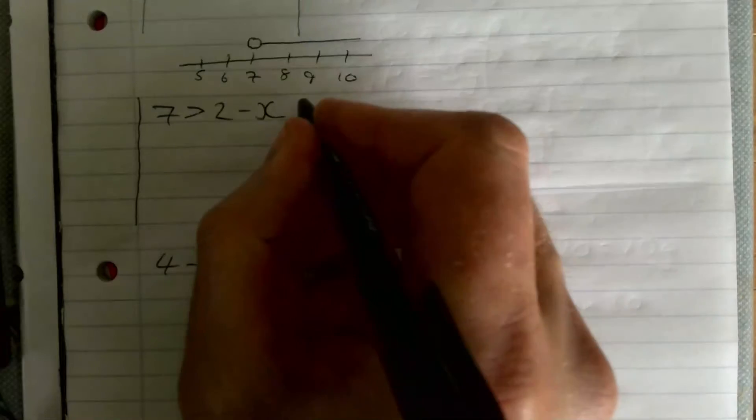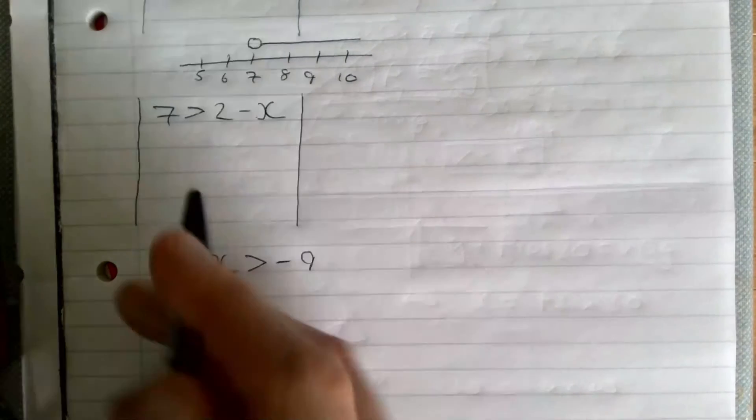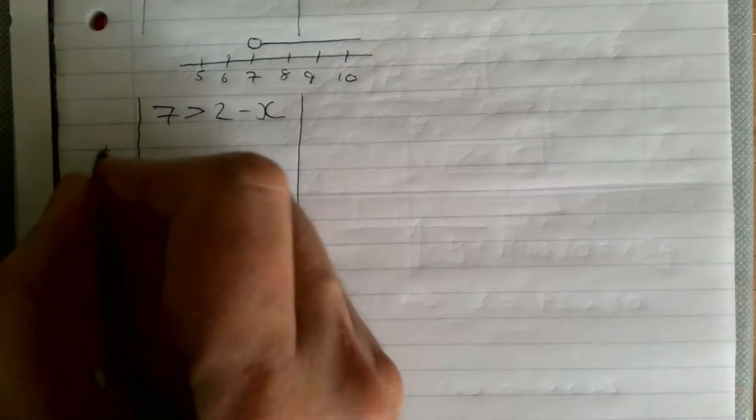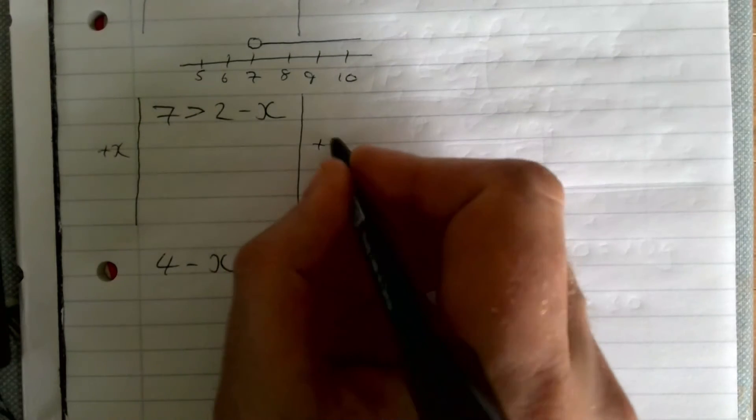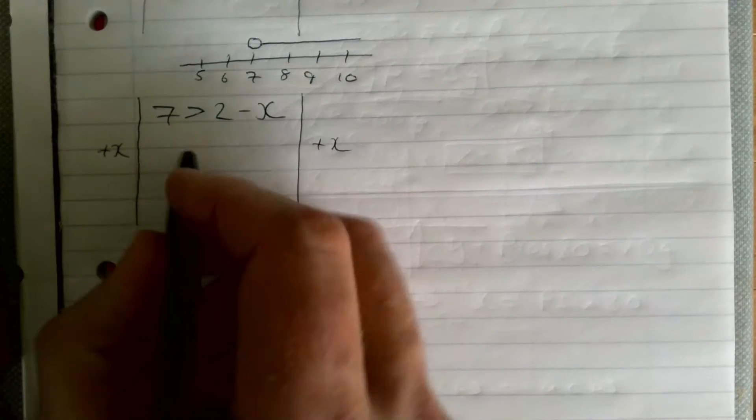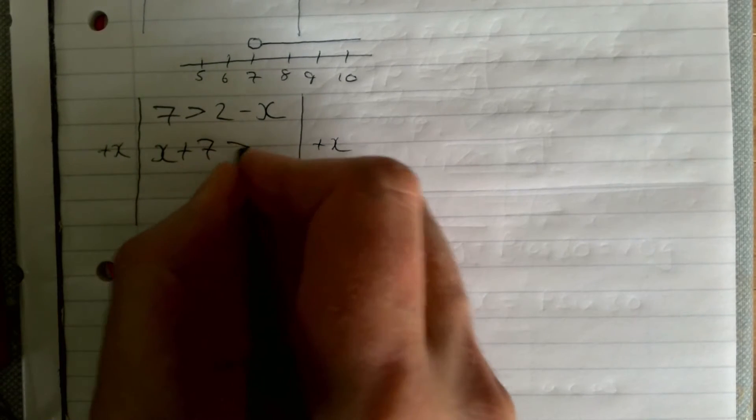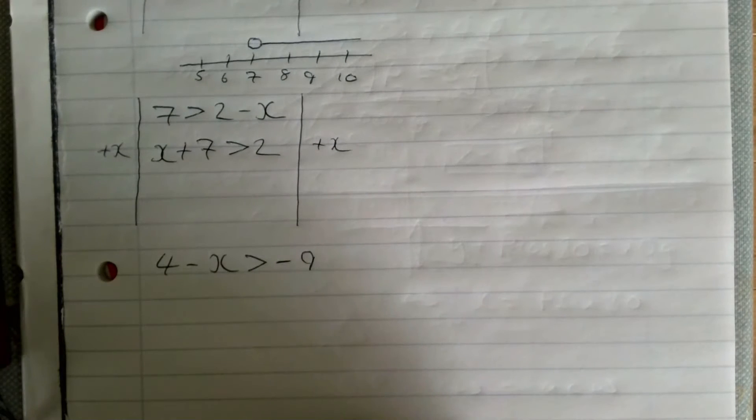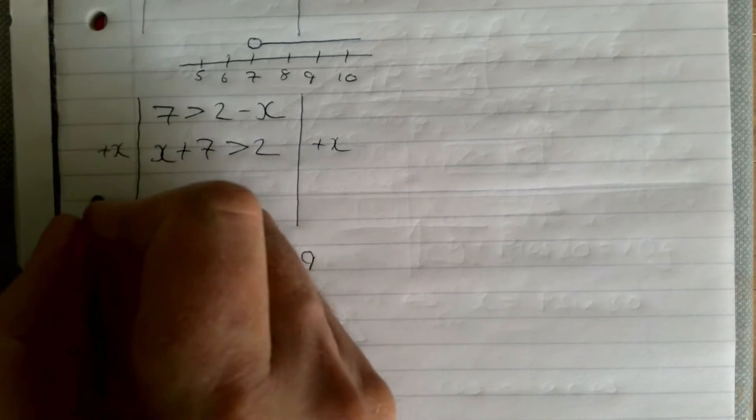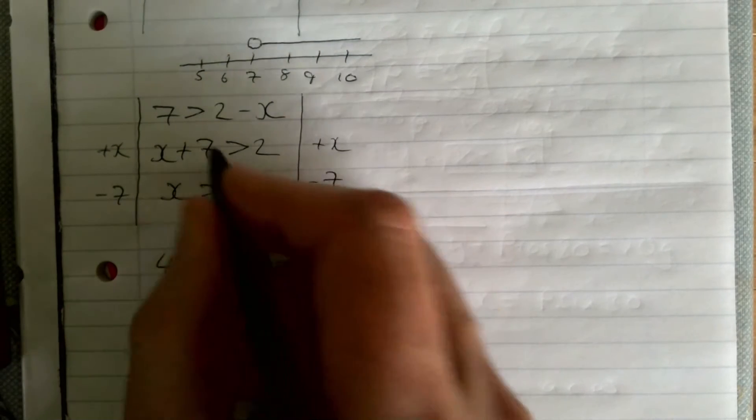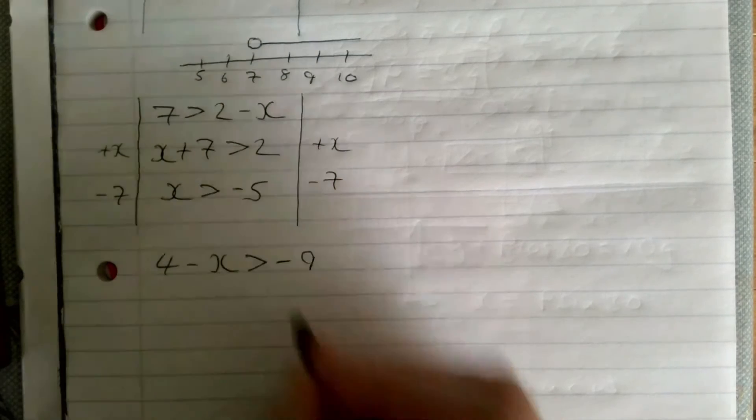This is going to take us two moves. Our first move is to add x to both sides. On this side there's a zero x, on this side is a minus 1x. Adding x to both sides gives us x plus 7 is greater than 2. I want to get rid of the 7, so I'm going to take away 7 from both sides. That gives me x is greater than minus 5.